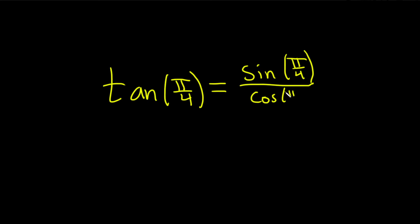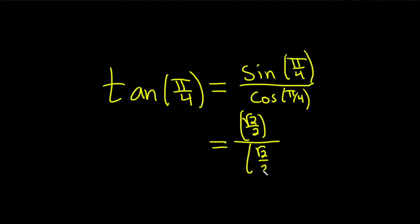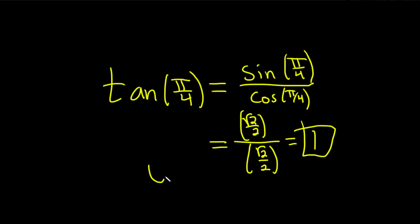This is probably a better way to do it. The sine of pi over 4 is the square root of 2 over 2, and the cosine of pi over 4 is the same. These are worth memorizing because they're the same — it's so easy. They cancel, so you get 1. So much better.